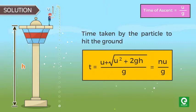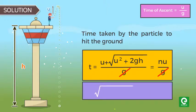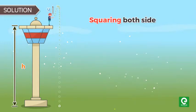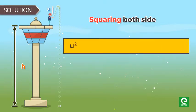g gets cancelled out. Under root u square plus 2gh equal to u into n minus 1. Squaring both sides, we get u square plus 2gh is equal to u square into n minus 1 whole square.